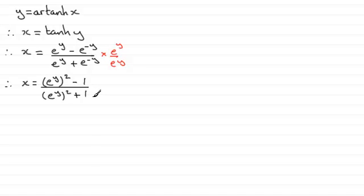Now, if I multiply both sides by this denominator here, we would therefore get x times e to the y all squared plus another x, and that would equal e to the y all squared minus 1.